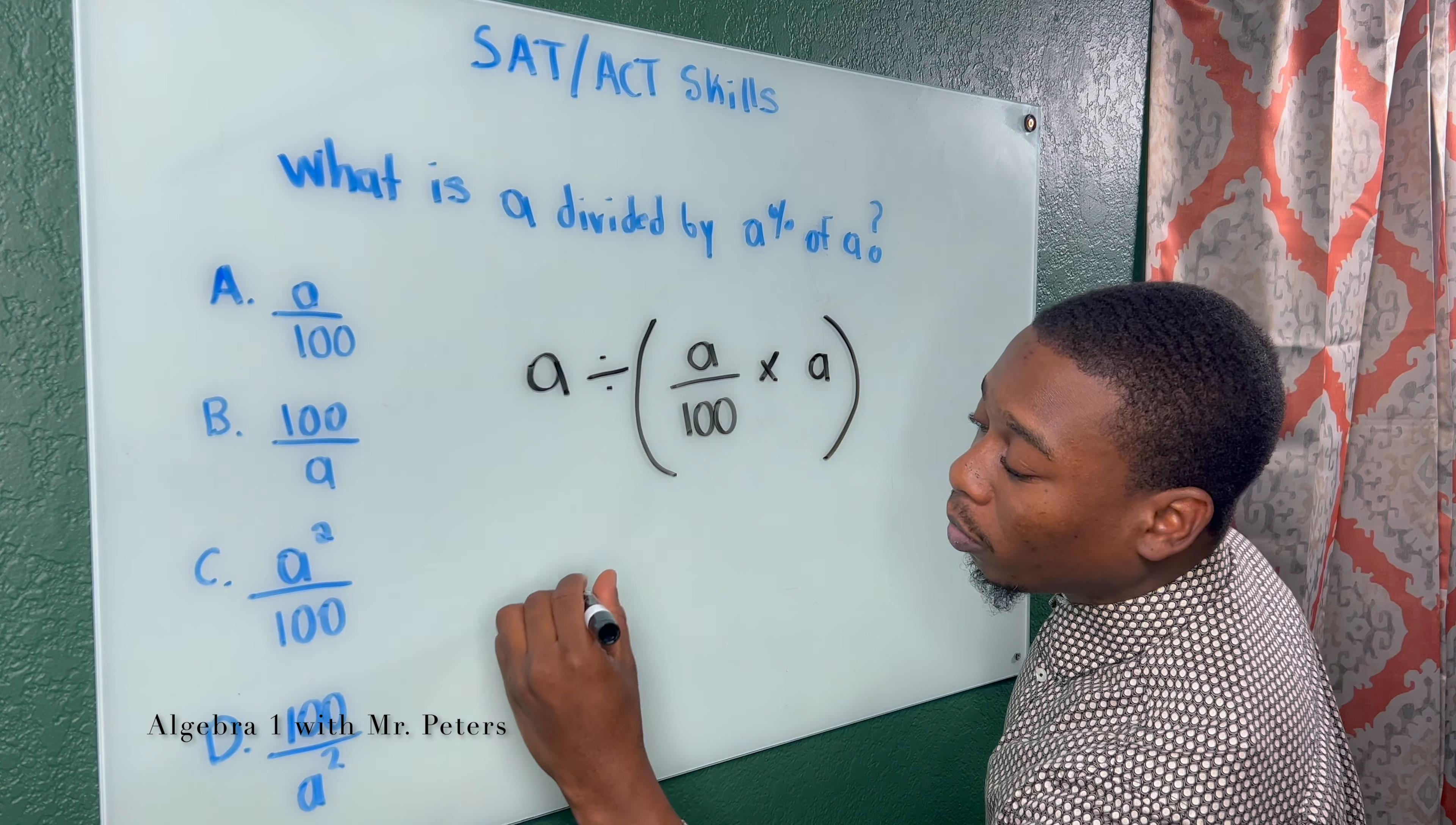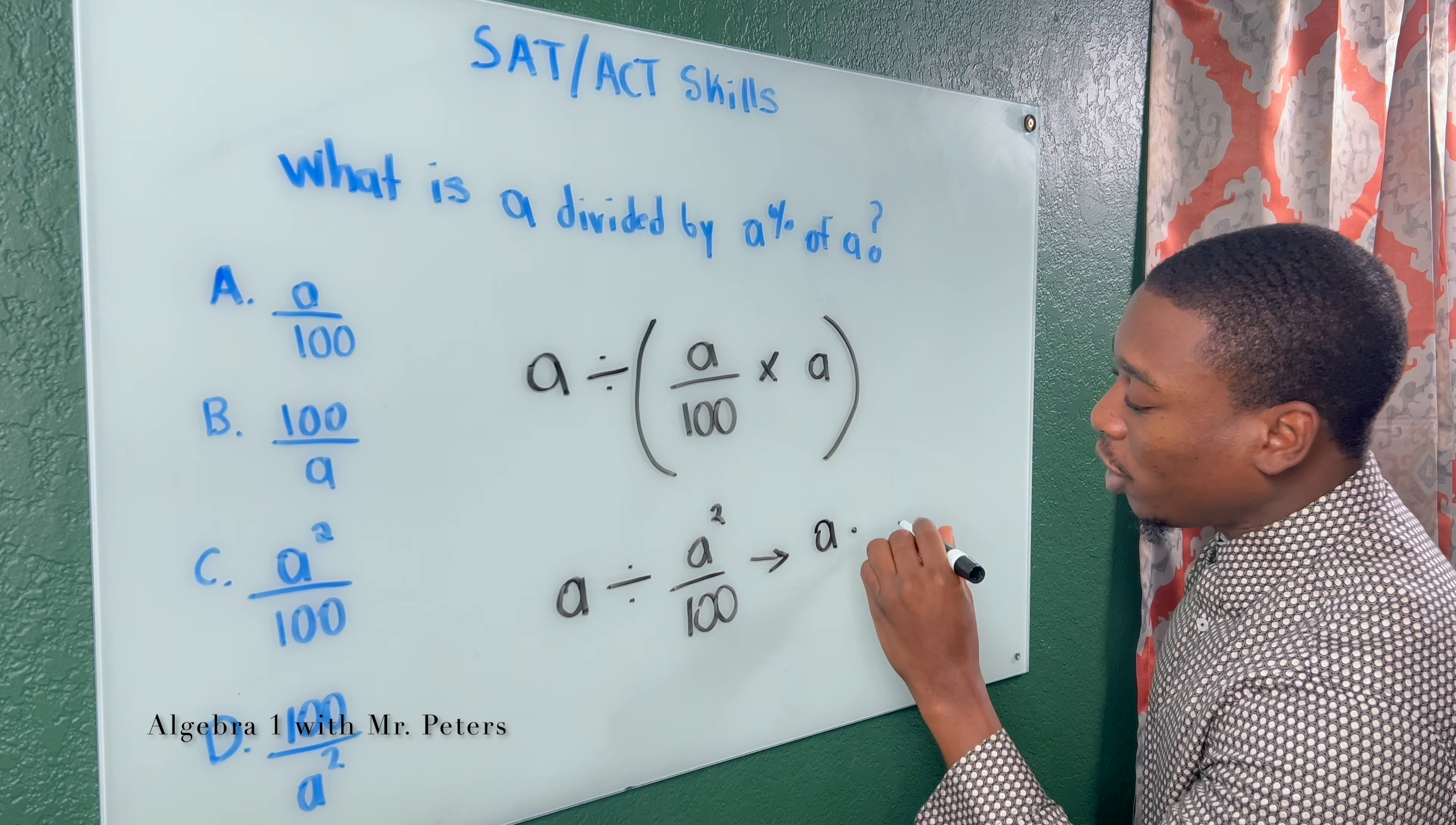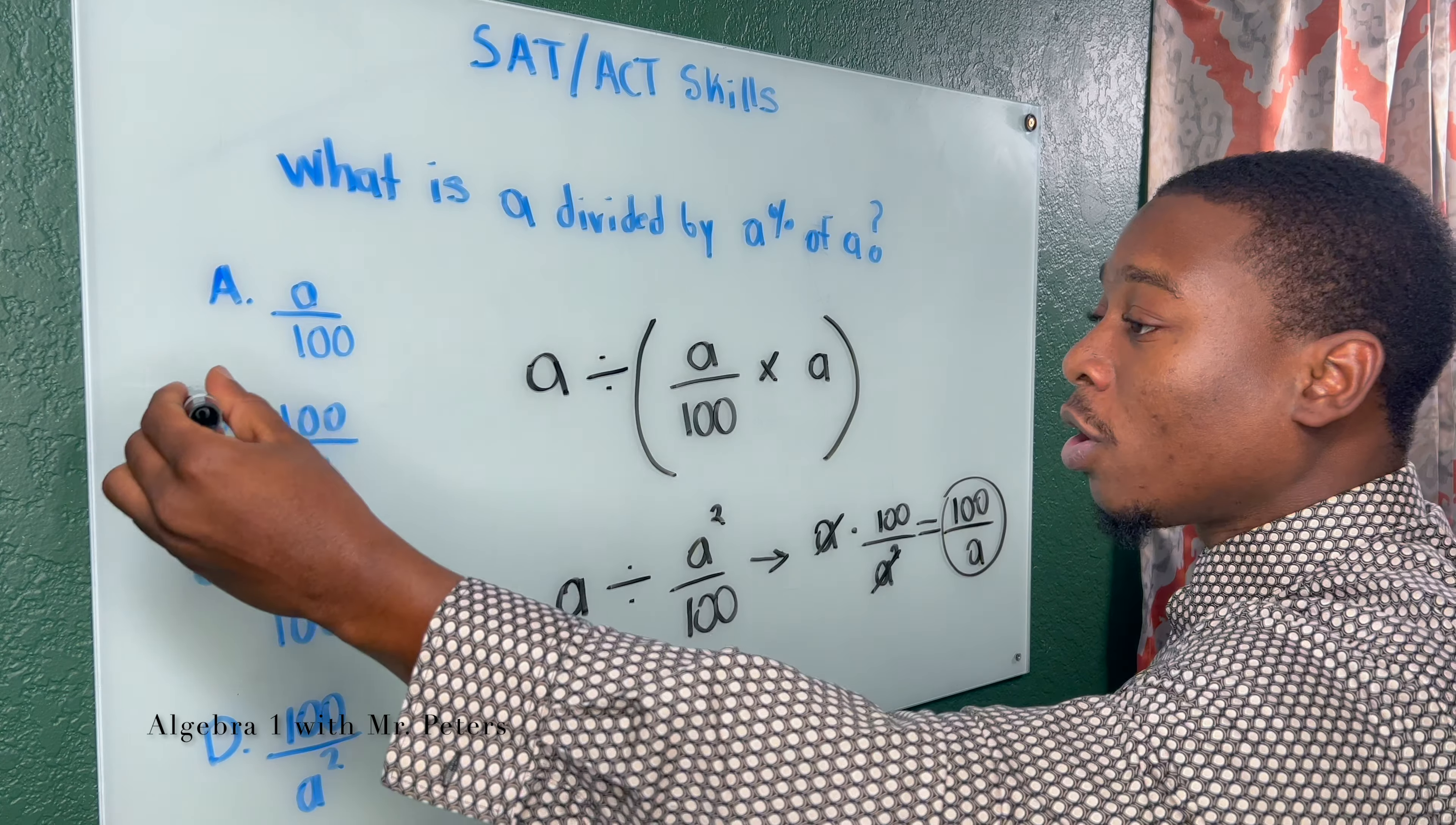So when we're solving this problem, we would have A divided by A squared over 100. And when we continue with this problem, we know rules of fractions, and we're dividing, which is going to turn into multiplication, and we take the reciprocal. So at this step here, what we would have is 100 over A, and that would give us an answer choice of B.